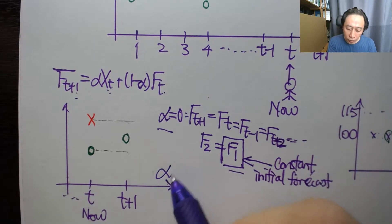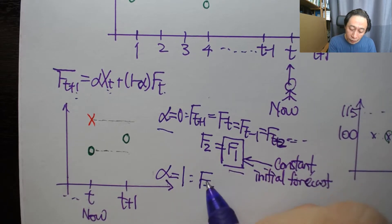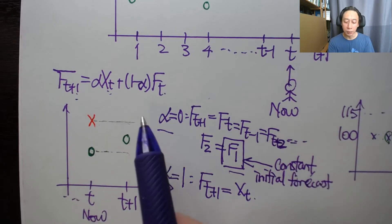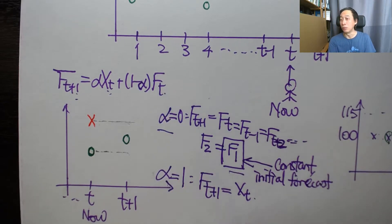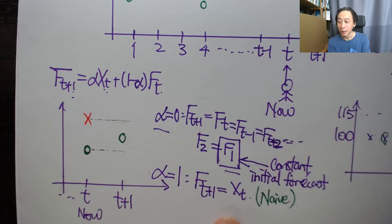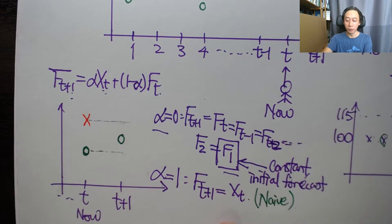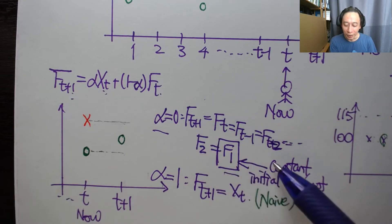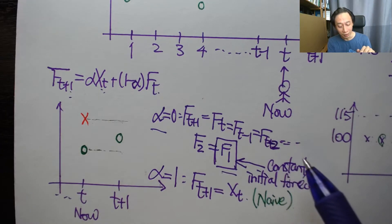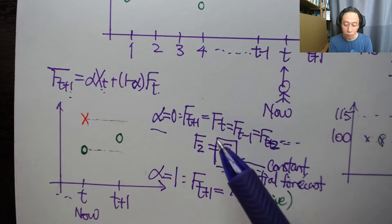At the other extreme, when alpha is one, f of t plus one equals x of t, because one minus one is zero and f of t cancels out. This is a form called naive forecasting, which is good for highly fluctuating data. When alpha is zero, we have the same forecast all the time, which works well when the data is dull and not moving.